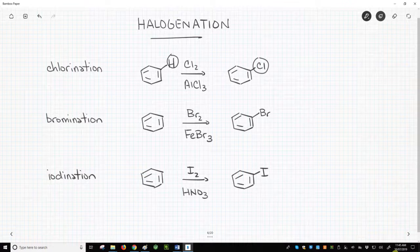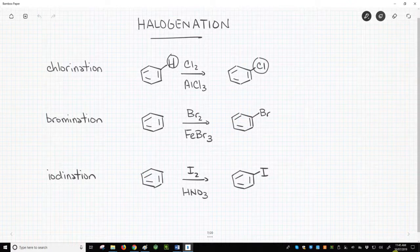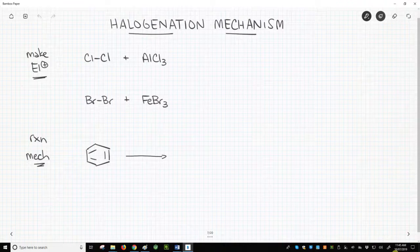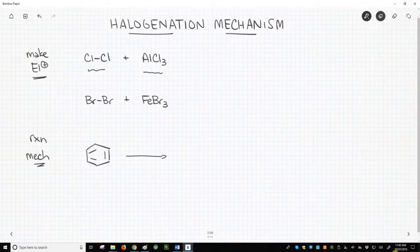Let's look at the active electrophiles in these reactions and the full mechanism. In the chlorination, two reagents – Cl2 and aluminum trichloride – react together to form a complex.